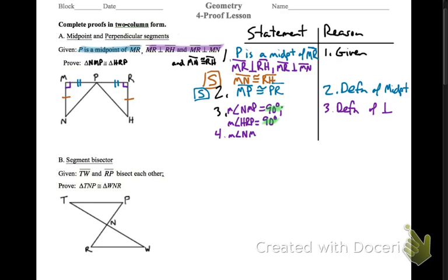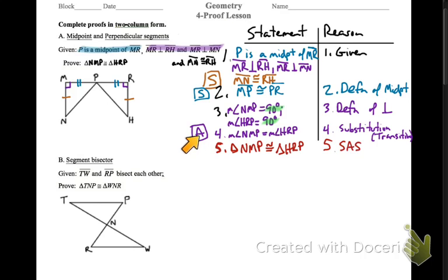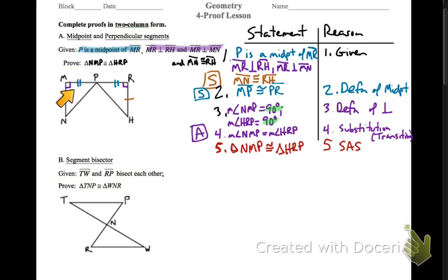How do we know those are equal to 90 degrees? Because that's what it means to have perpendicular segments. Now, if they're both equal to 90 degrees, then they have to both be equal to each other. That is what we call substitution or the transitive property. So now we've said that these two angles are congruent — there's our angle — and we can now make a statement of congruency of the triangles. Triangle NMP is congruent to triangle HRP. The reason: SAS, side-angle-side.